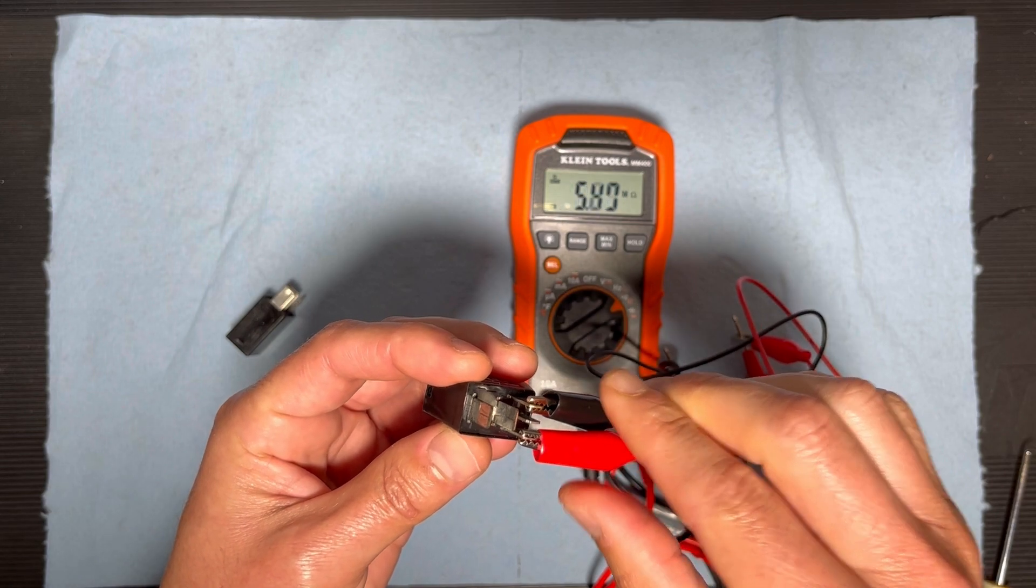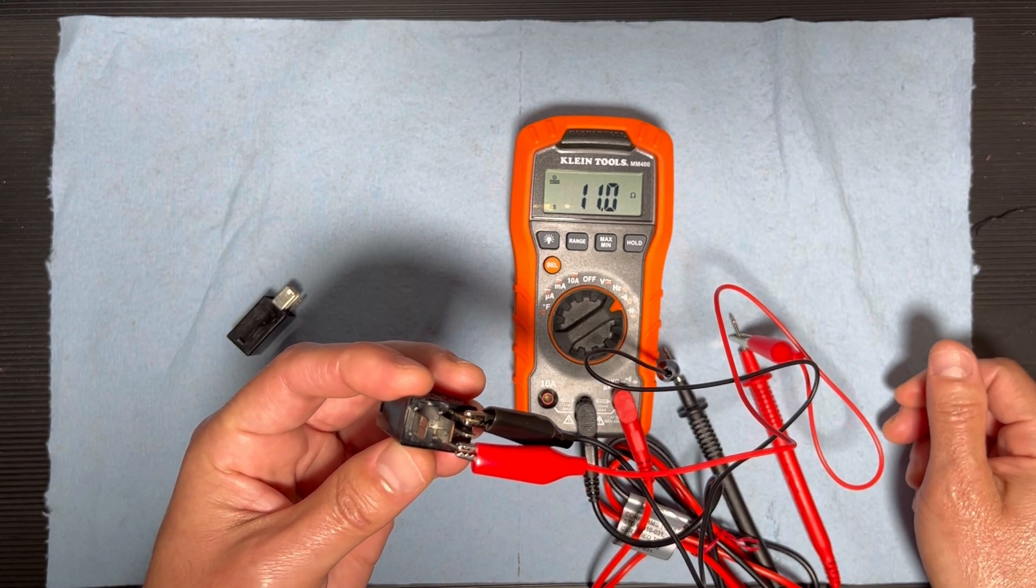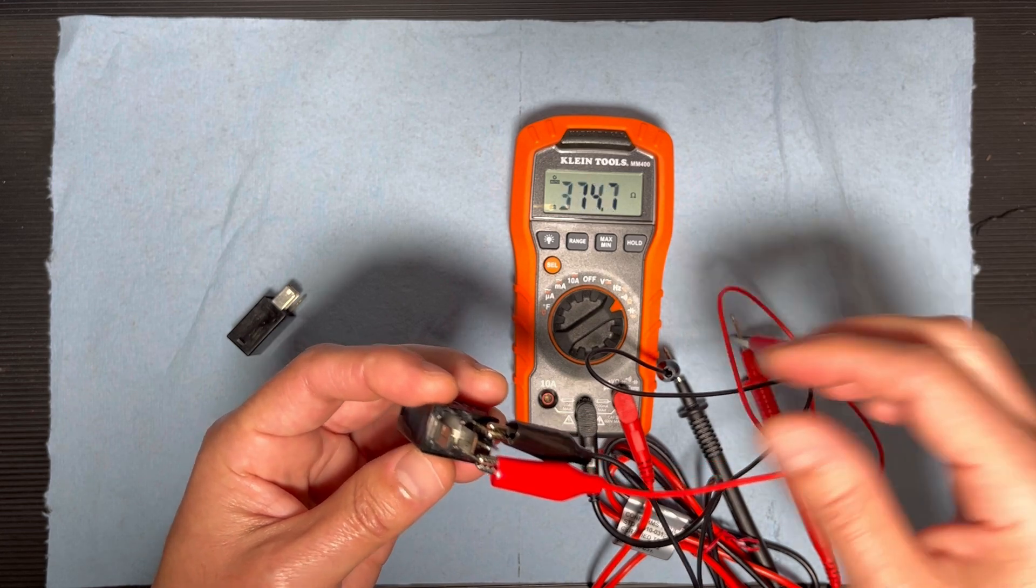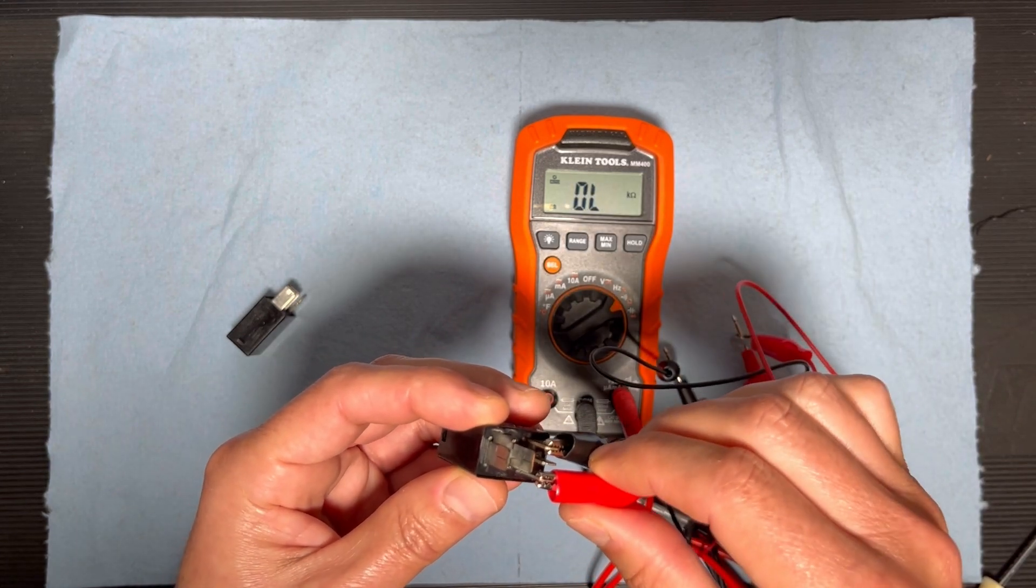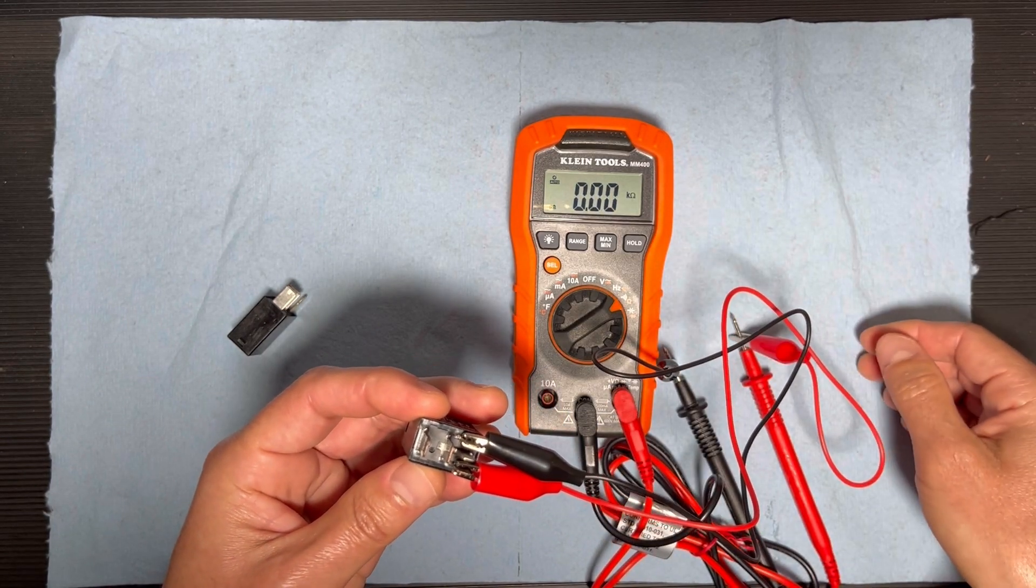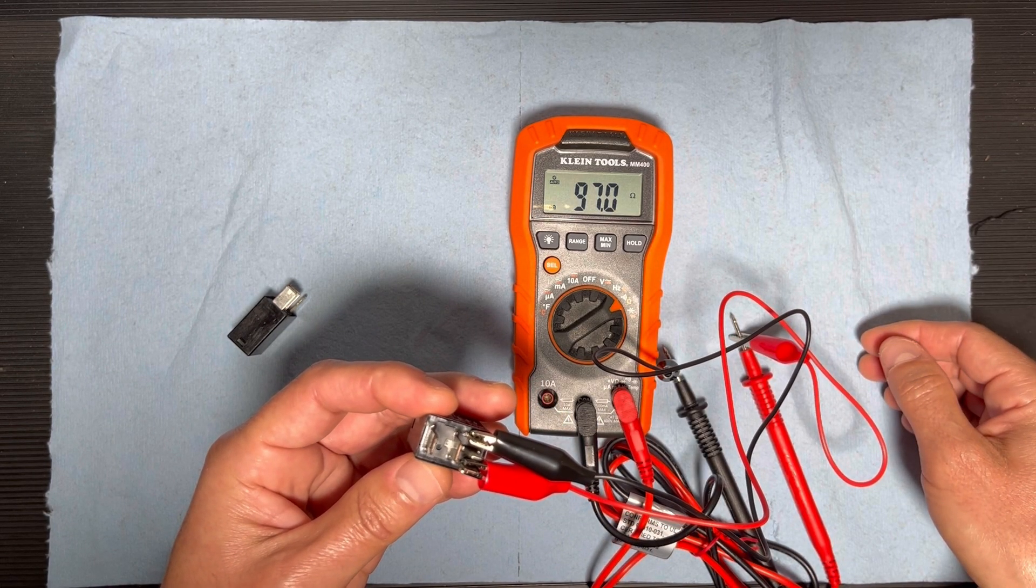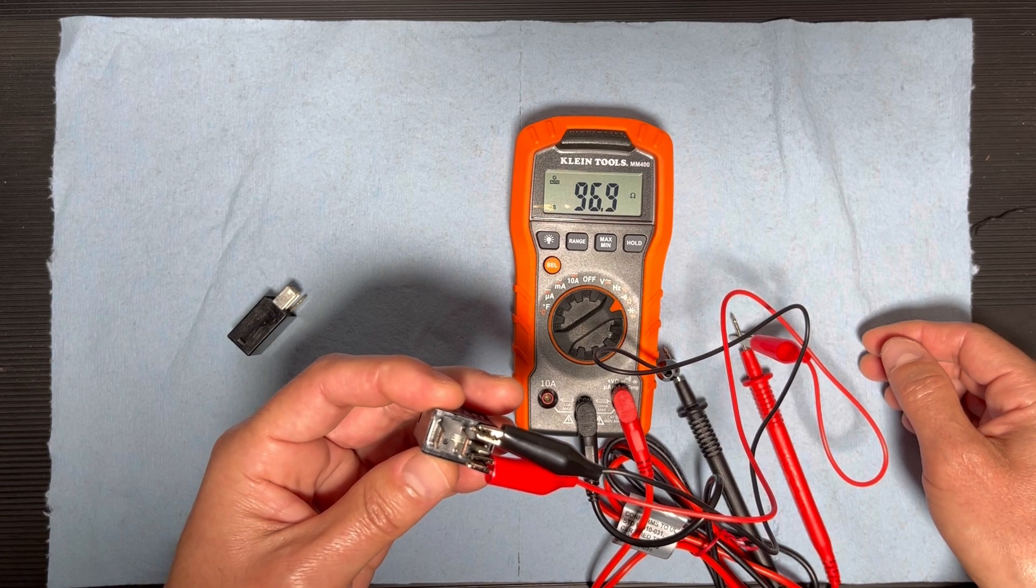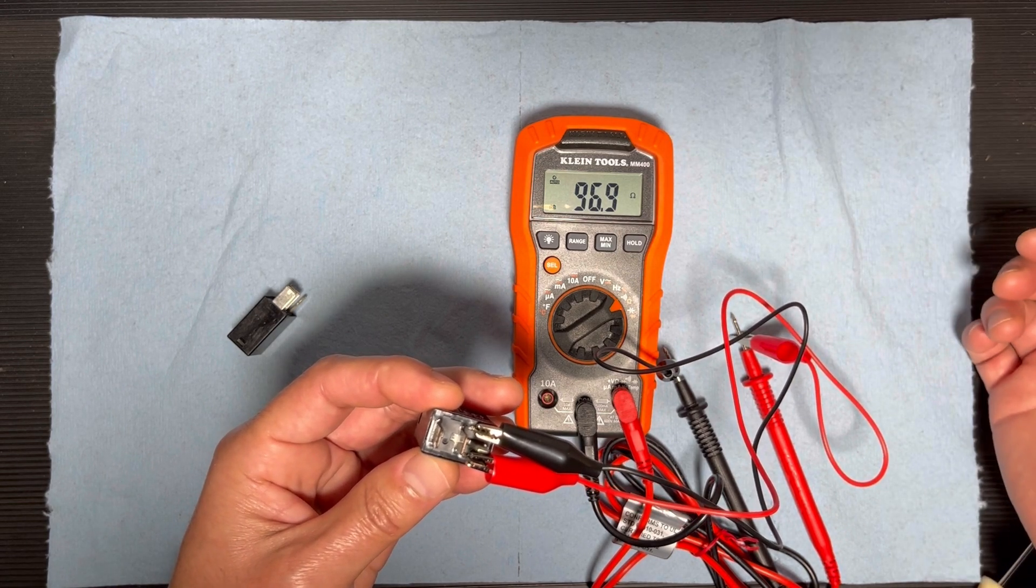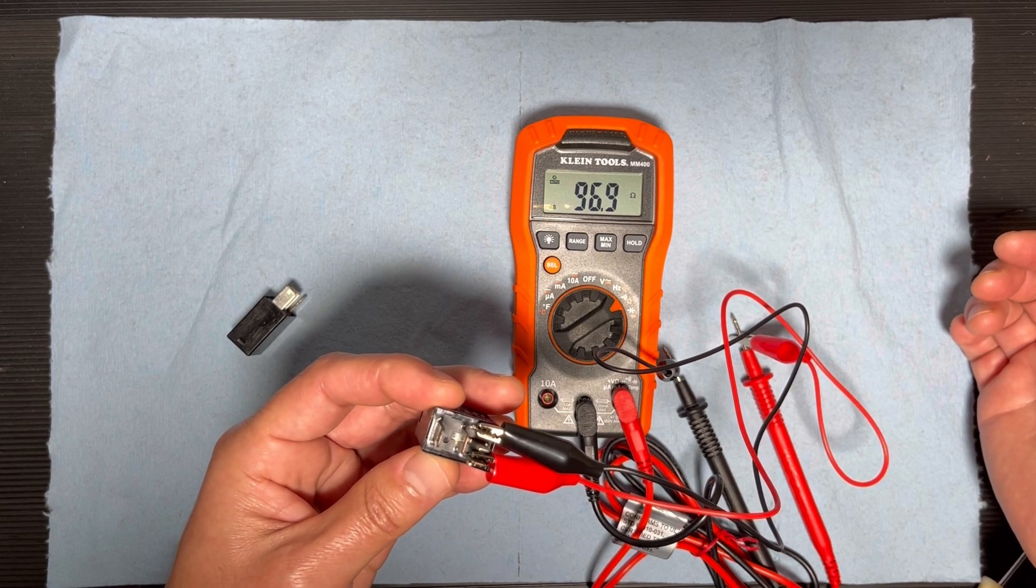Again it's showing some numbers. It has a little movement here, let me make it more secure. Again it's showing between the range 50 and 200. In this case it's 96.9, which means this relay is good.